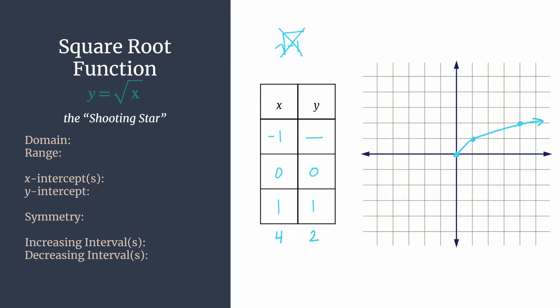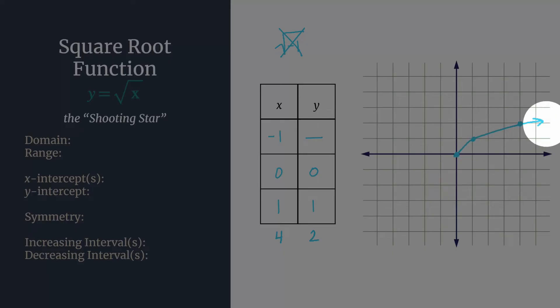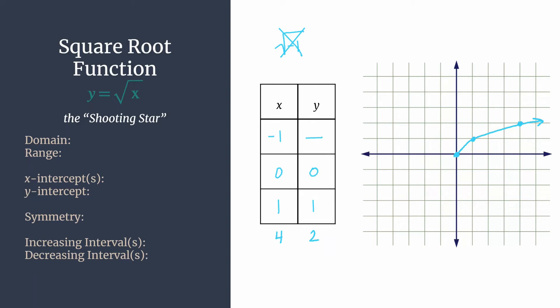So starting here at zero, zero, and then moving to positive infinity. And we see we have a point on the origin at zero, zero. So our domain will want to include zero. And it's all x's from zero to positive infinity.